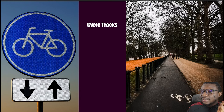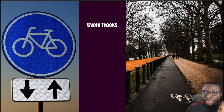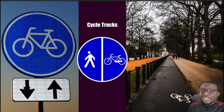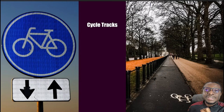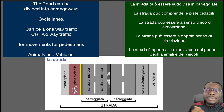The sign you see — a torus — tells you that you are in the cycle lane. In some cases it will be divided into two with the drawing of a human, indicating that both cyclists and pedestrians can transit. But in this particular case, it's just for bicycles.